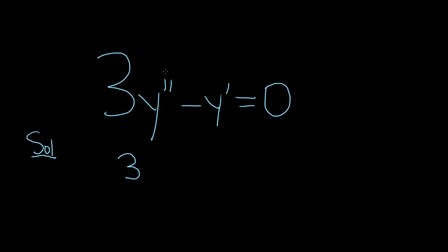and then you match the order of the derivative with the power. So this is an order 2 derivative, so this would be m squared, and then minus, and then this is order 1, so it's just m to the 1, so just m. And you set this equal to 0.